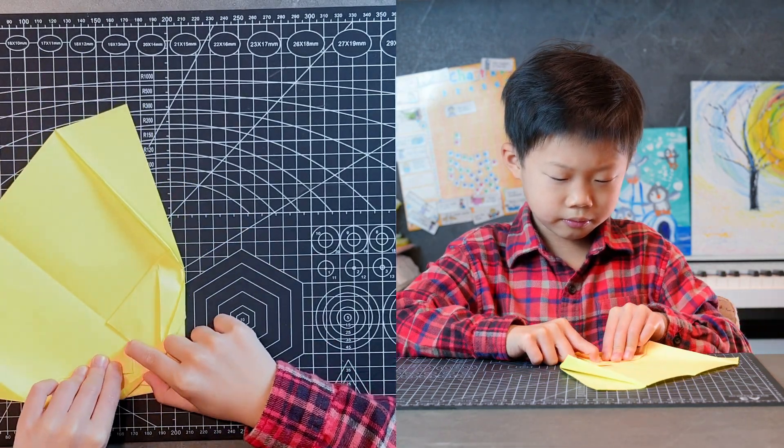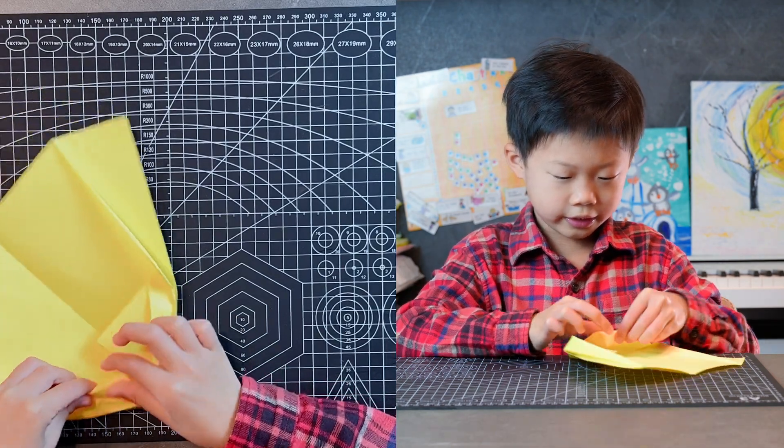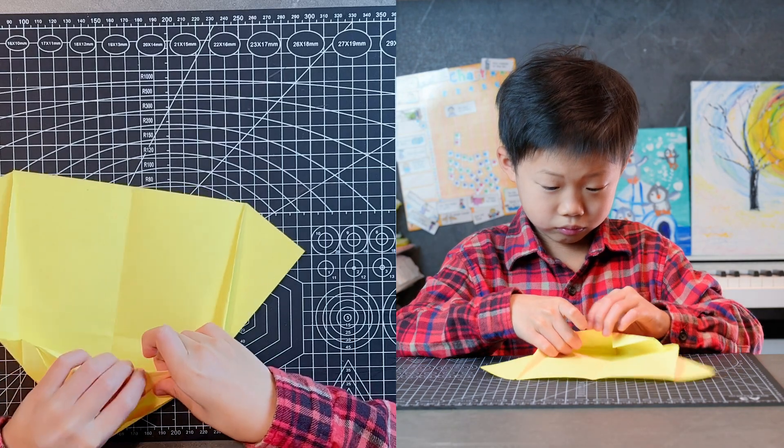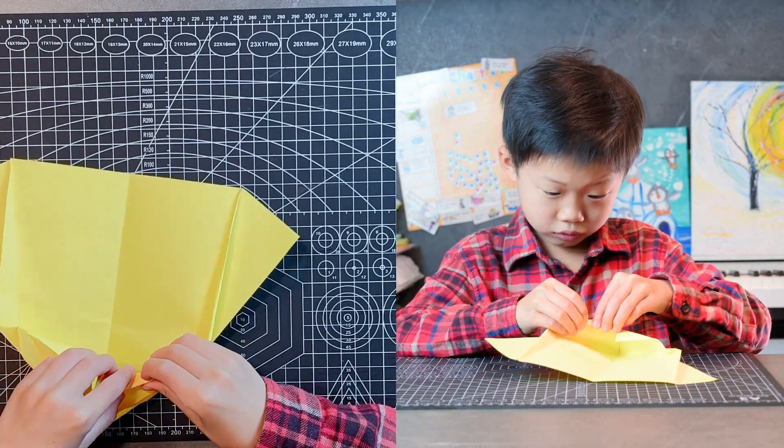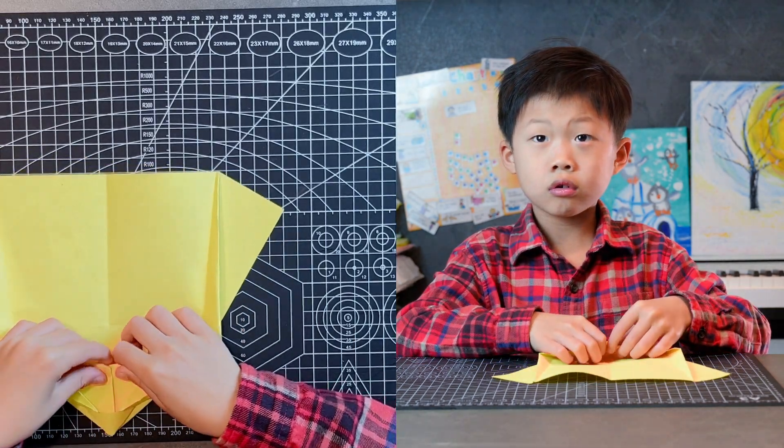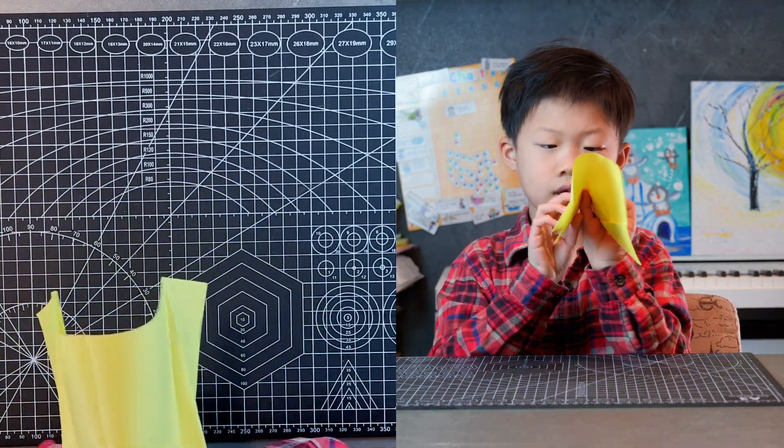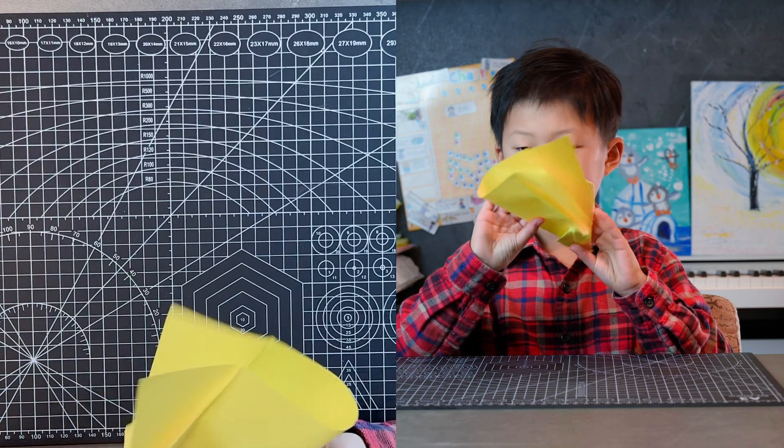And then, put this edge to there. Tuck it inside. Do the same thing on the other side. And then, fold it in half. Like this.